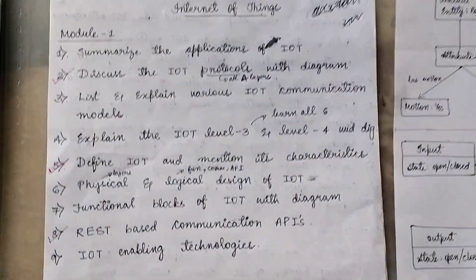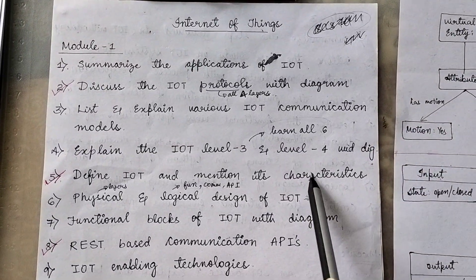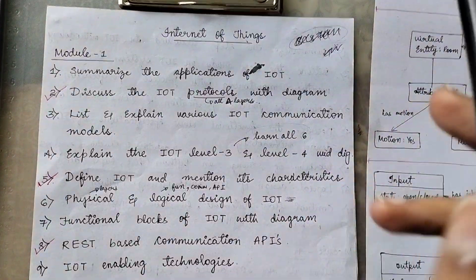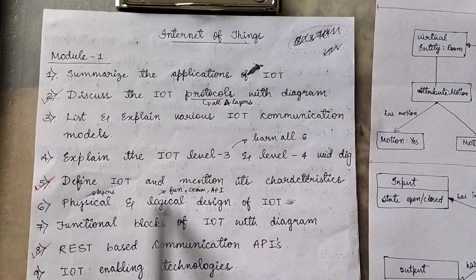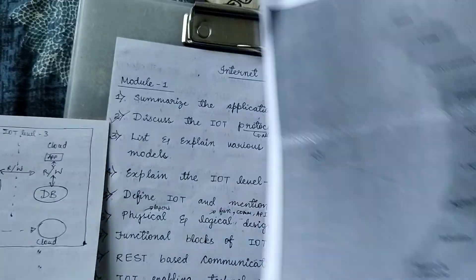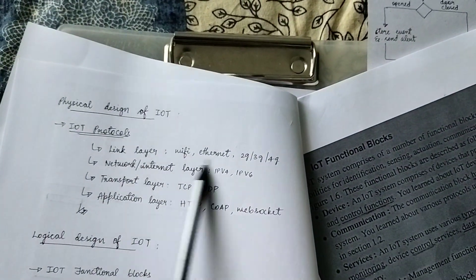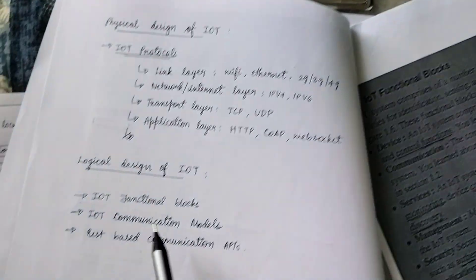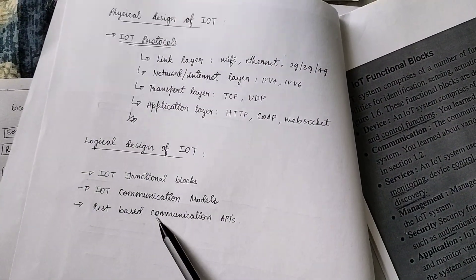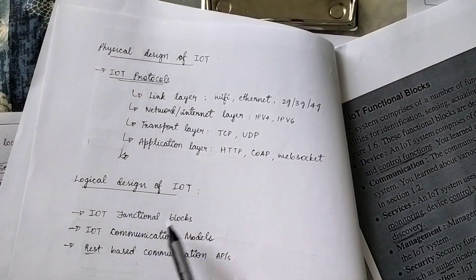This question is mentioned in the first module - very sure this question will come. They might ask about physical and logical design separately. For physical design there are four layers, very basic knowledge. For logical design it's about functional blocks, communication, and REST API - I'm gonna learn REST API properly.